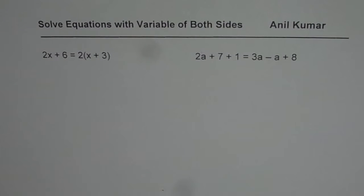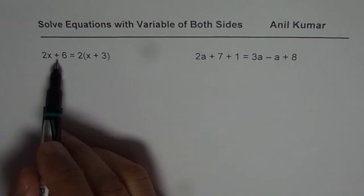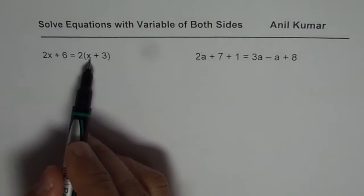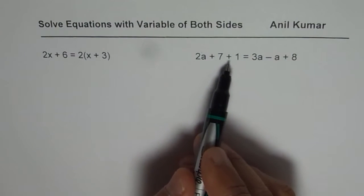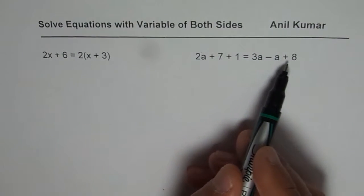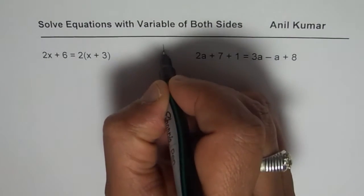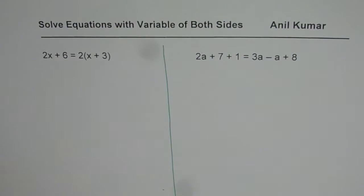I am Anil Kumar and here we have two interesting examples. I would like you to pause the video, answer them, and then share with me your solution. Here is my solution. The first equation is 2x plus 6 equals to 2 times x plus 3. The second one is 2a plus 7 plus 1 equals to 3a minus a plus 8. Let me solve them one by one and then we will discuss their solution.